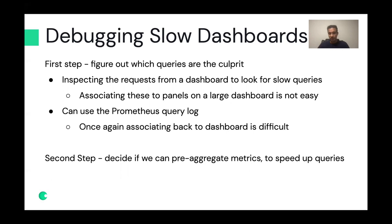The first step is to figure out which queries are the culprit. Inspecting the requests from a dashboard to look for slow queries is a good start — you can do that in the Chrome or Firefox inspector panel — but even if you know what these queries are, you have to associate them back to the panels on a large dashboard, which isn't always easy. Another option is to use the Prometheus query log, which has information on all queries running on the system. If you're able to parse that information you can associate it back to a dashboard, but that again is difficult. Once we figure out which queries are the culprit, we need to decide that we can actually pre-aggregate these metrics to speed up the queries.